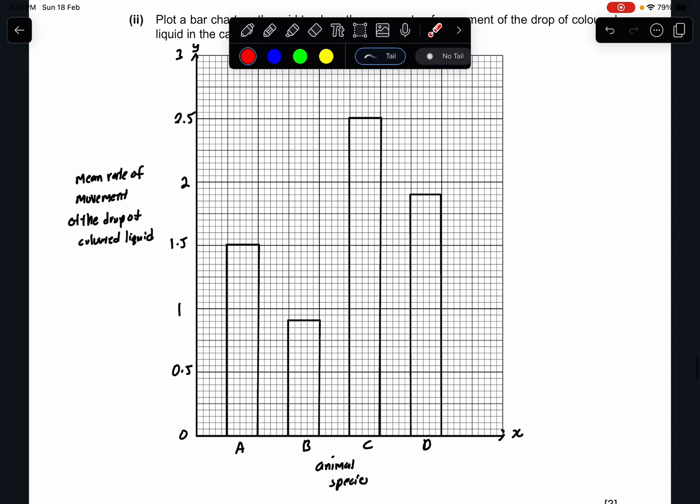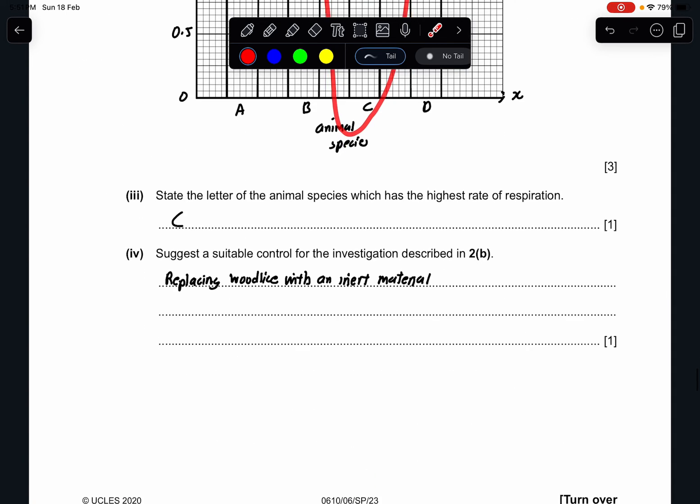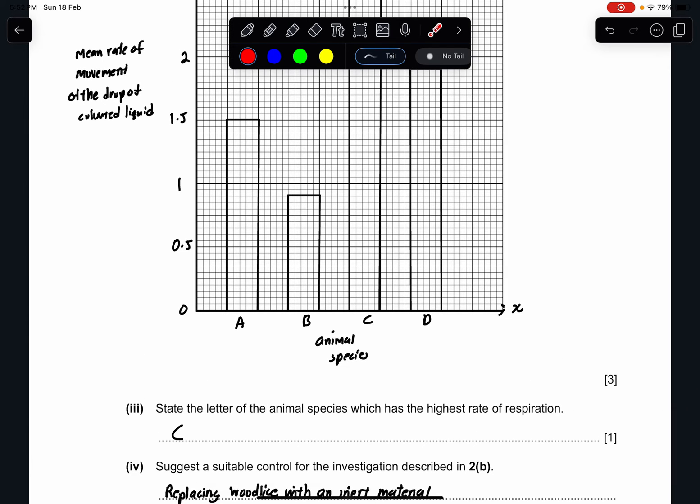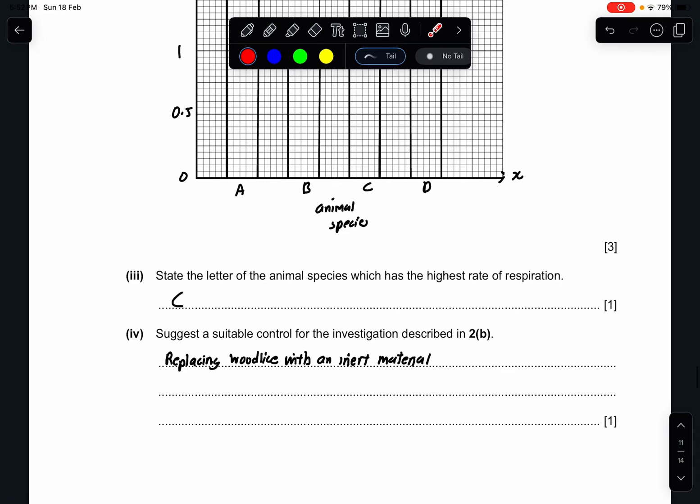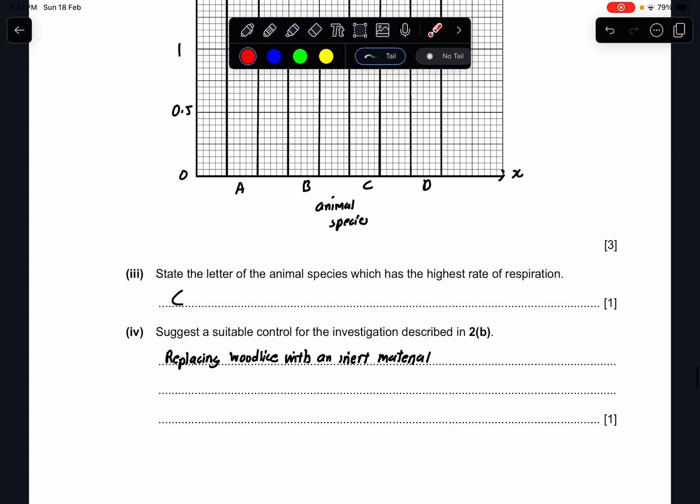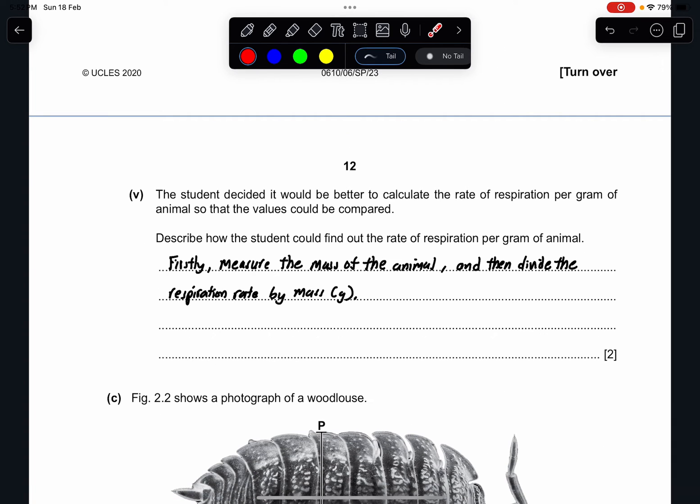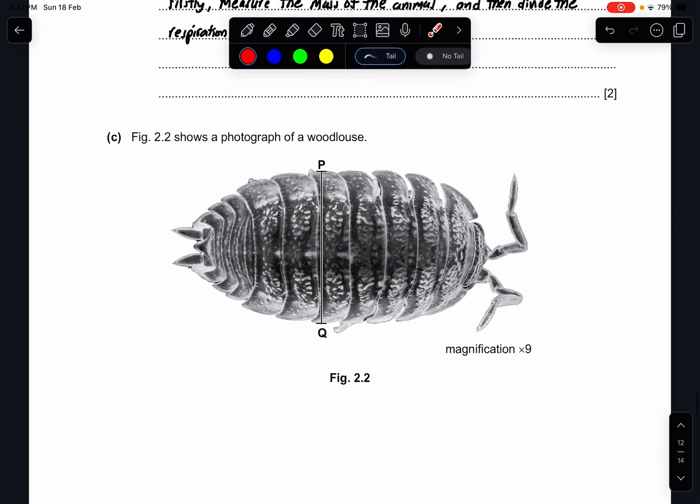Part 3: State the letter of the animal species which has the highest rate of respiration. Very simple, the tallest one, which is animal species C. Part 4: Suggest a suitable control for the investigation described in part B. A control is something that, if I add another variable, will it affect the result? For this, I replace woodlice. Since woodlice is a living material, I replace with an inert one. Inert means it cannot react with anything. It's basically just there, doesn't do anything. So this is my answer. Part 5: The student decided it would be better to calculate the rate of respiration per gram of animal so that the values could be compared. Describe how the student could find the rate of respiration per gram of animal. Usually it's always mass divided by the respiration rate. So I will measure the mass of the animal in grams and then divide the respiration rate with it. You should get your answer.